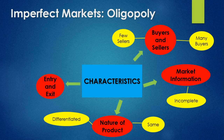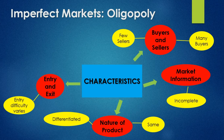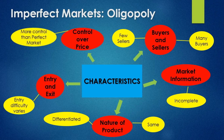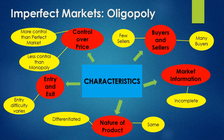Looking at entry and exit into the oligopoly: there are varying stages, so depending on the type of product you wish to serve, that will produce different levels of entry. And in terms of control over price, they might not have as much control as a monopoly, but they do have more control over the price of a product than a perfect market.